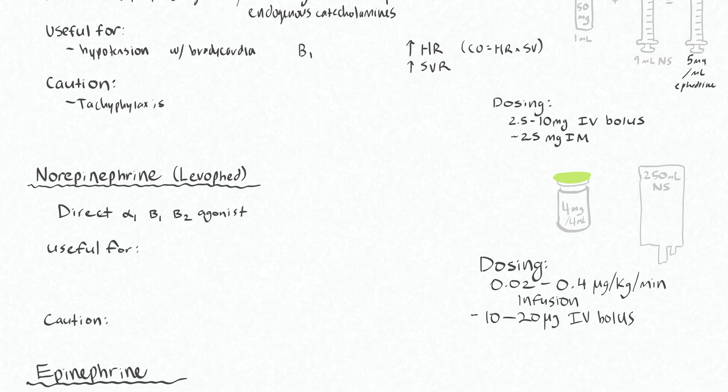Norepinephrine is a direct alpha-1 and beta agonist with particularly more alpha activity than beta activity. This is similar to phenylephrine but also has the added benefit of a little bit of beta activity like ephedrine does.